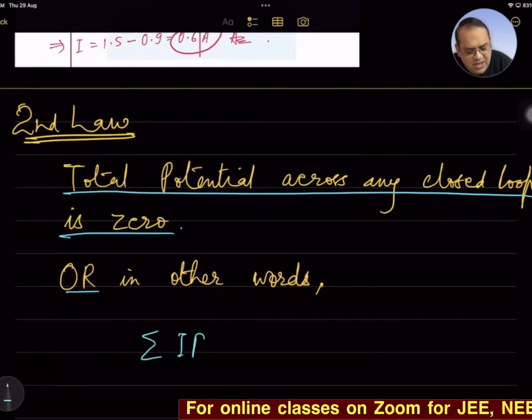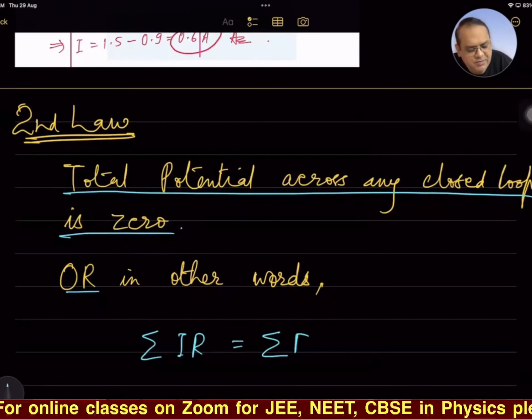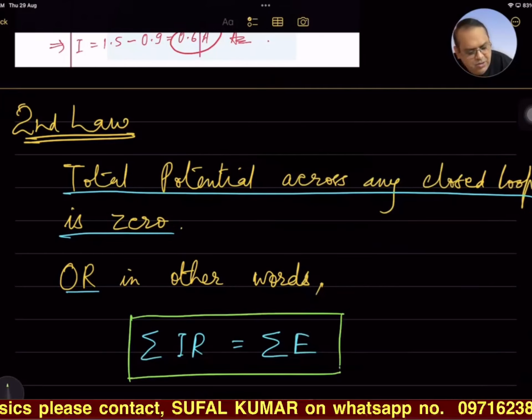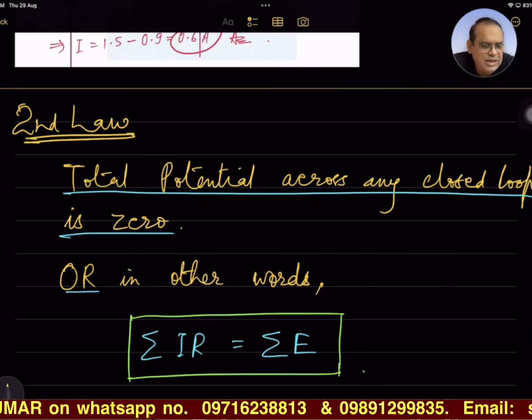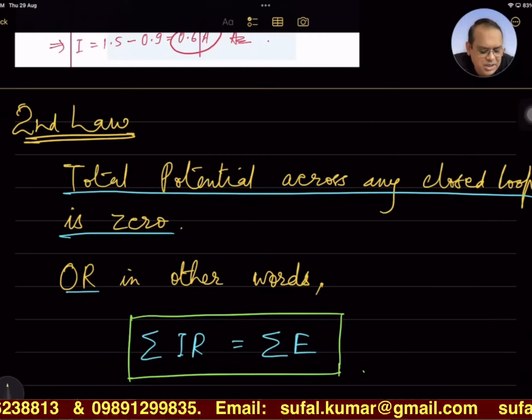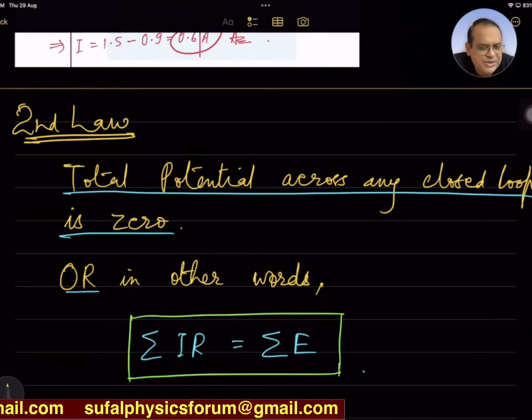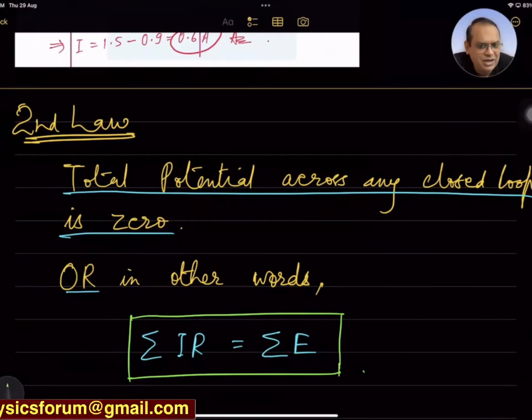Sigma IR is equal to Sigma E. For any closed loop, total EMF sum should be equal to all the potential drops across the resistors in that very closed loop.